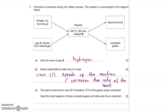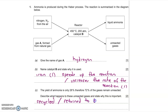In part C, the yield of ammonia is only 28%, meaning 72% of the gases remain unreacted. The question asks you to describe what happens to these unreacted gases and to state why this is important. You get one mark for the idea that the unreacted gases are recycled — put back into the reactor — and the second mark for explaining that this helps to reduce costs.